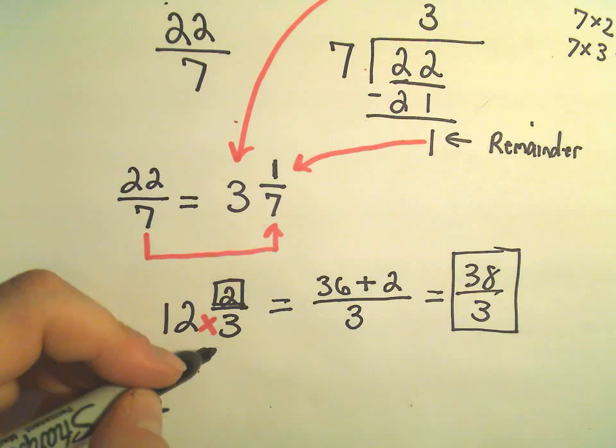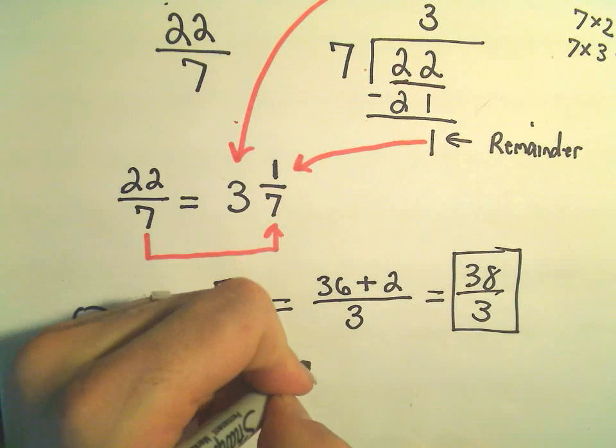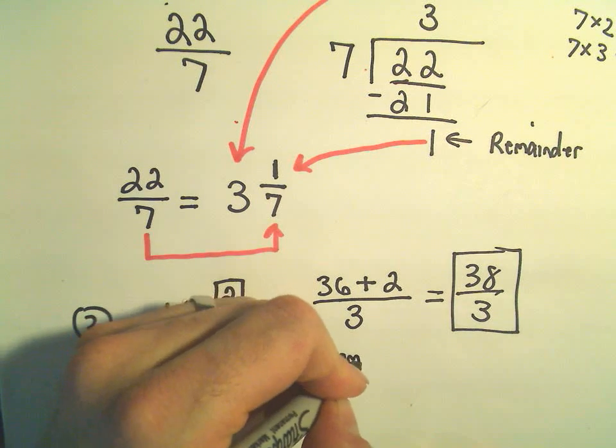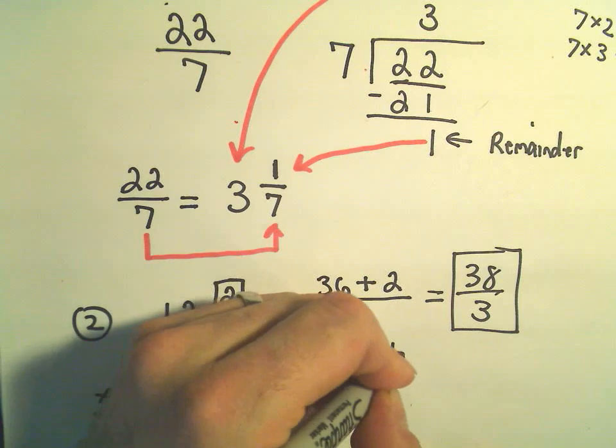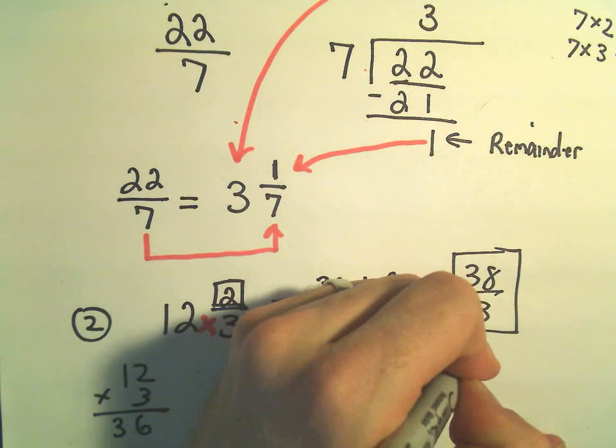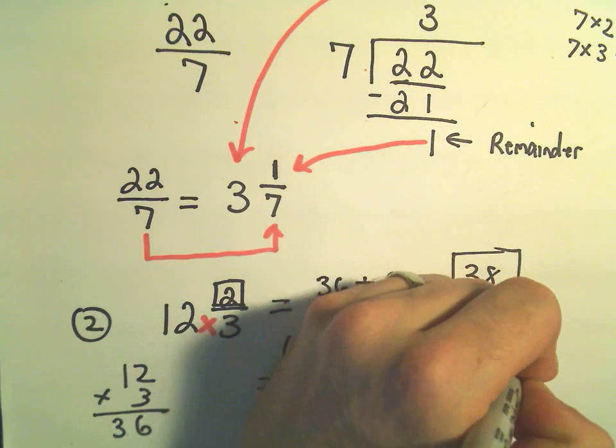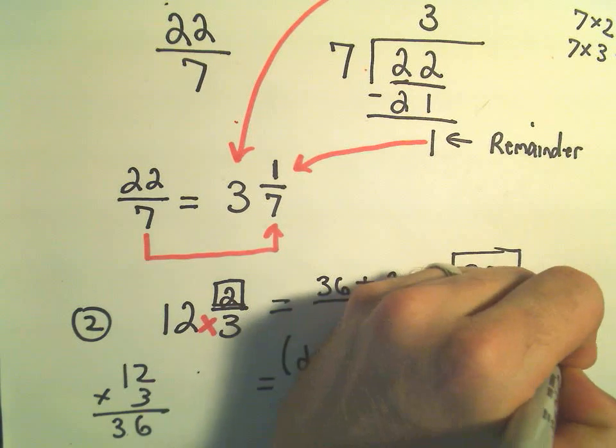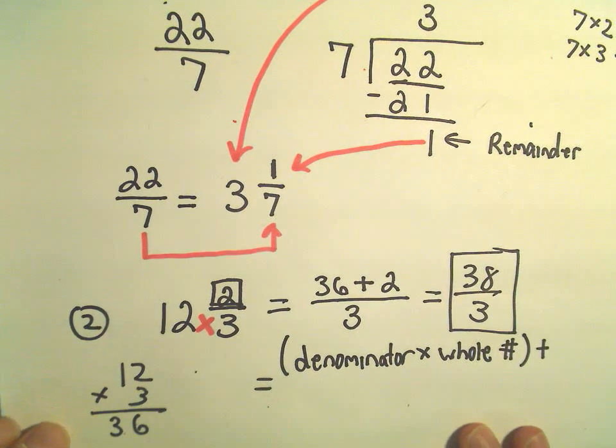So kind of, I guess you can kind of think about this little formula when you convert. We sort of take the denominator, we multiply that by the whole number, and then we add to that the numerator.